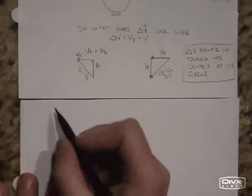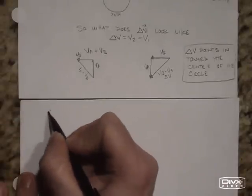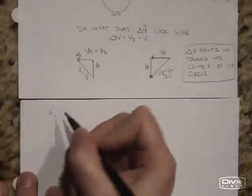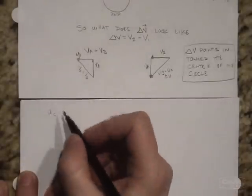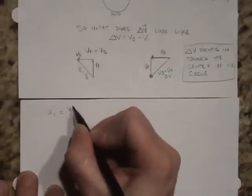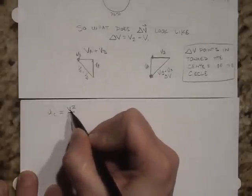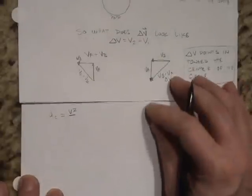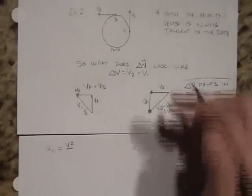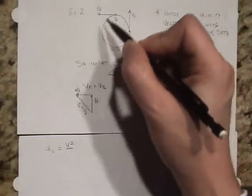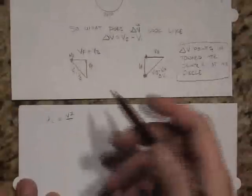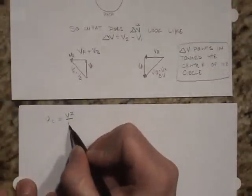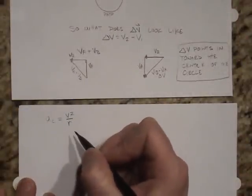The centripetal acceleration — we'll use a little subscript c — is equal to the square of the velocity. This velocity will not change. The velocity around our circle, or around our curved path, the magnitude does not change. Only the direction is changing. It's equal to the velocity squared divided by the radius of the path.